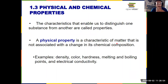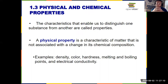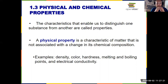Starting with physical properties. The question we're answering here: can you observe this property without changing or altering the chemical state of whatever you're looking at? Both physical and chemical properties are used to distinguish different substances, but they're two different subsets. The physical property — characteristic of matter not associated with a change in chemical composition.